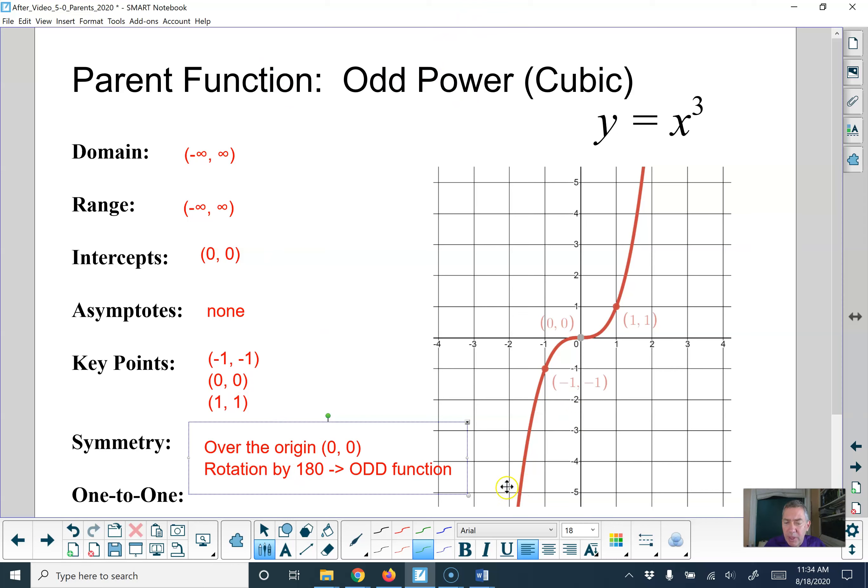It is 1 to 1 because each y value has only one x value. Here at 0, 0, it's starting to get close, but it never turns back on itself. So it is a 1 to 1 function.